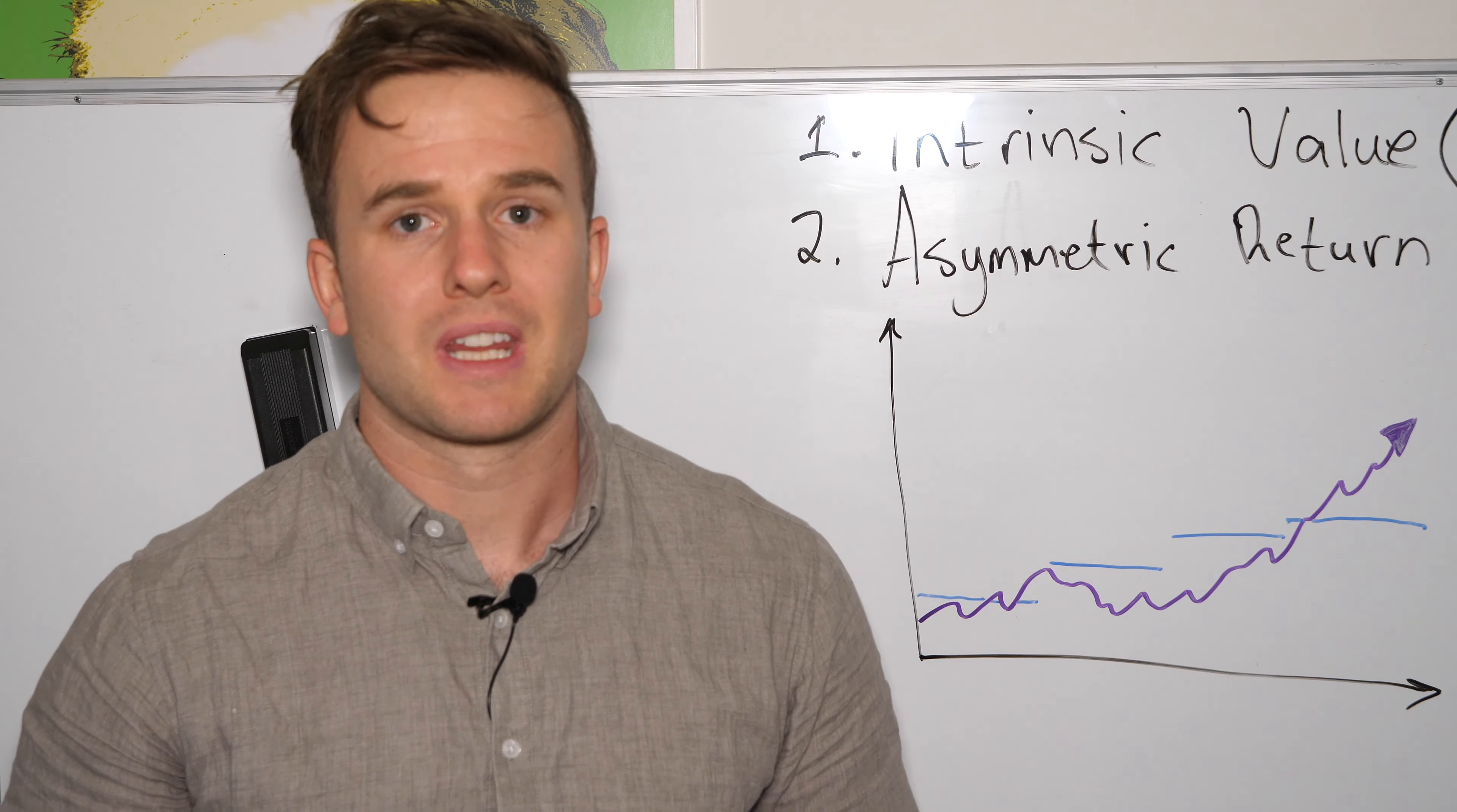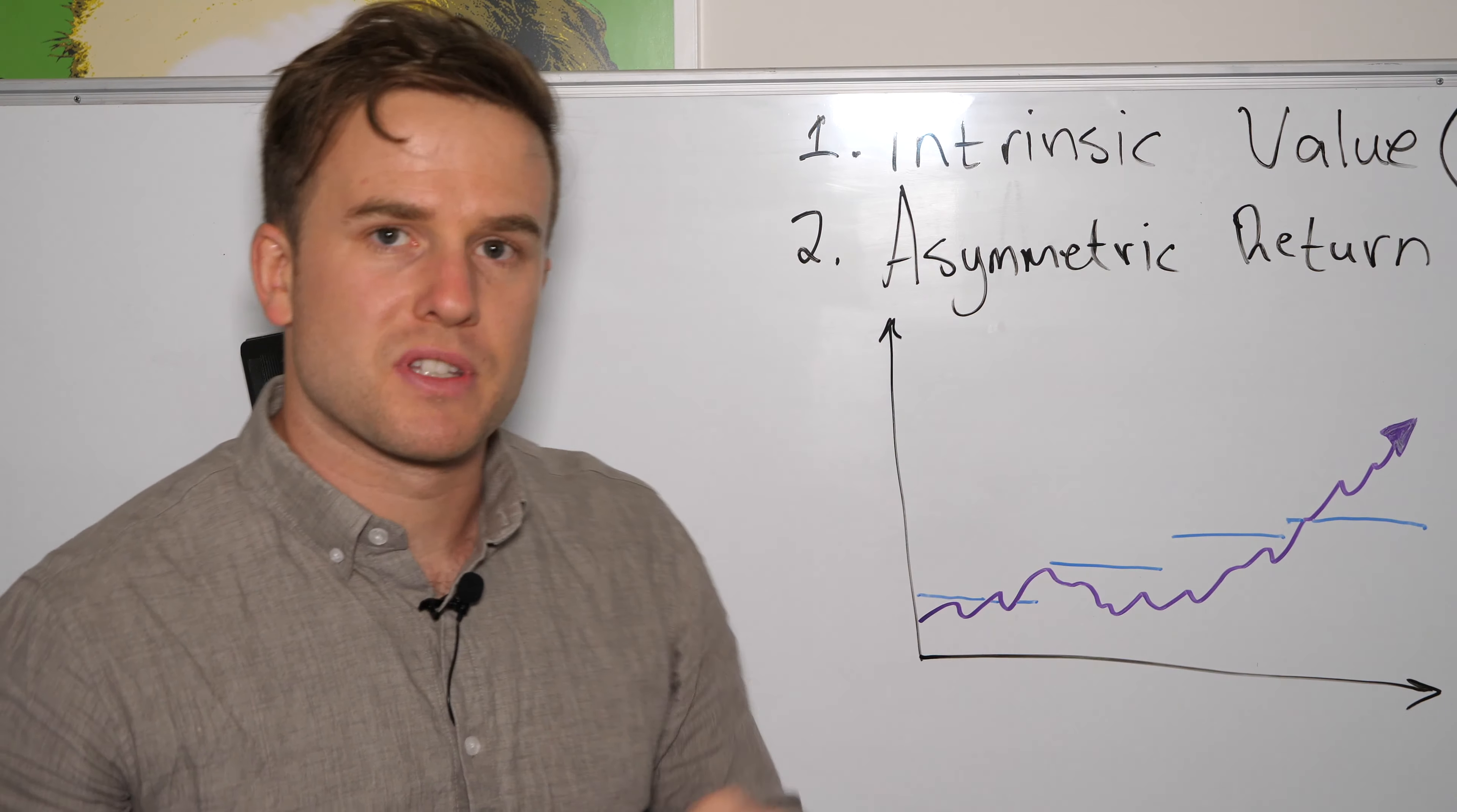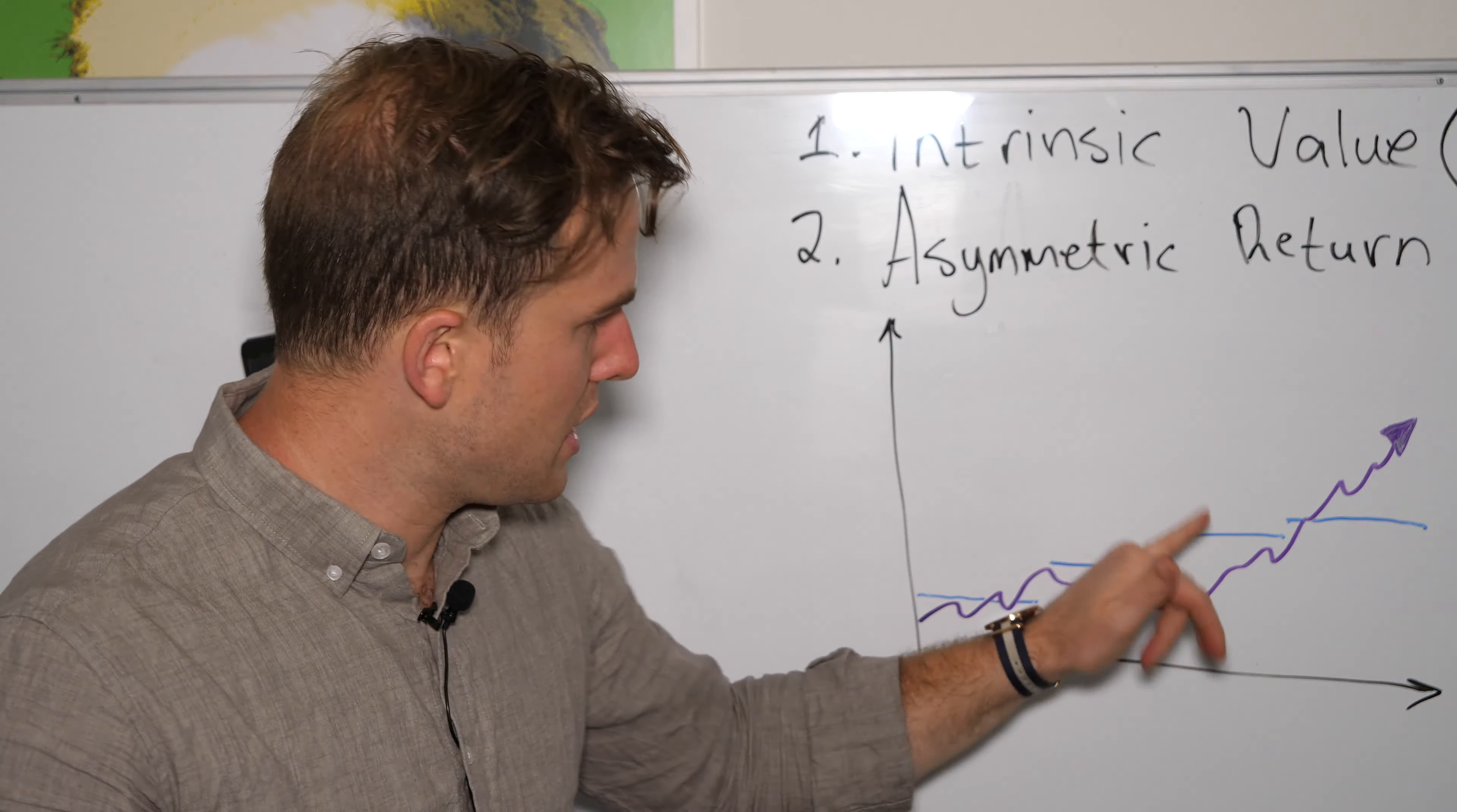So let's use a concrete example. Let's say we have a share price that looks like this. This is this purple line here. Apologies for the drawing. And then we have some blue lines which represent valuation. Now you probably noticed something already. The blue lines are horizontal. They're not jumping around as much as the share price, right?